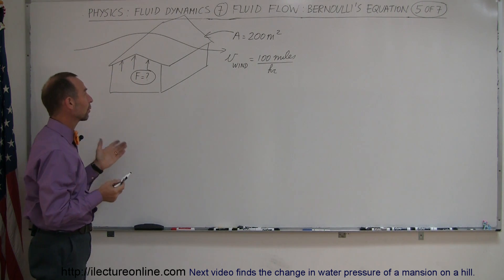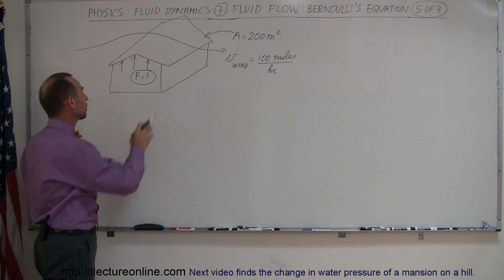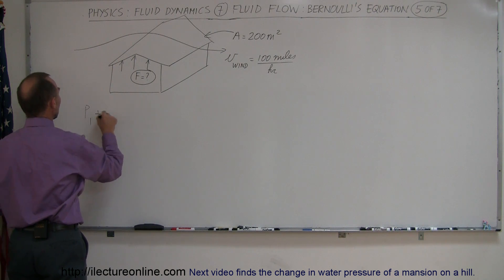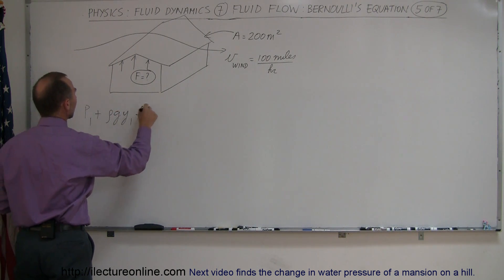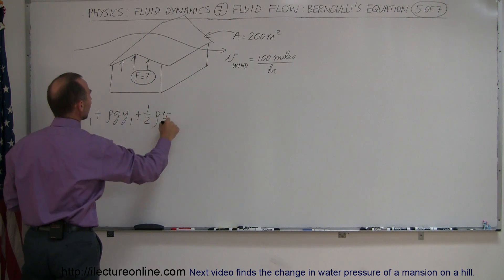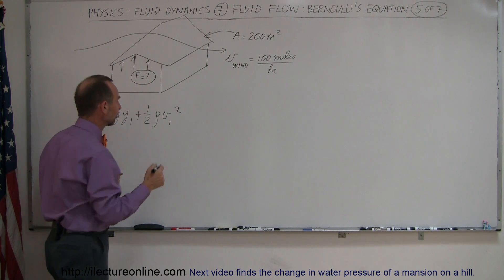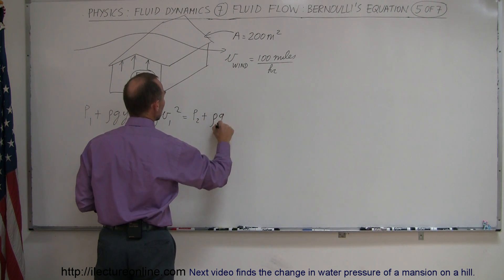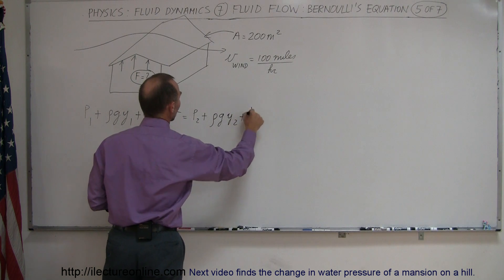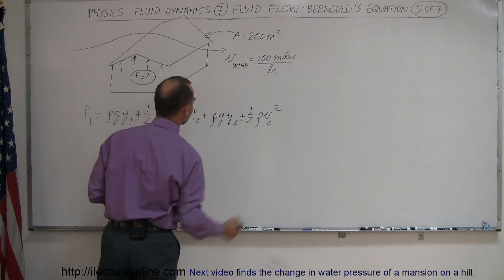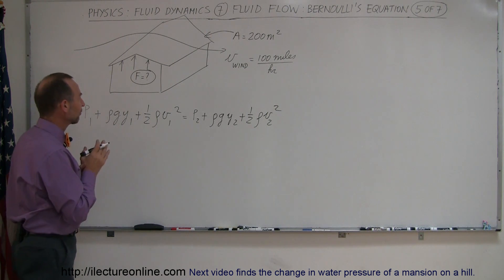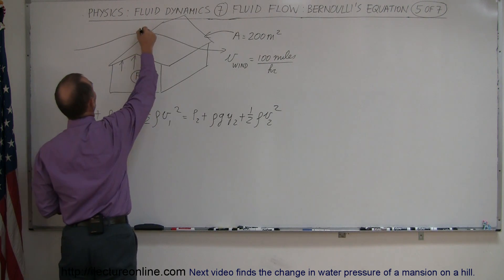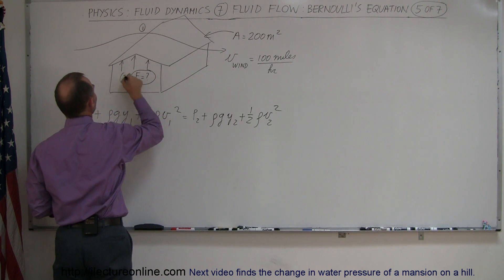First, we're going to find the pressure difference between the outside and the inside. For that we need Bernoulli's equation: P1 plus rho·g·Y1 plus ½·rho·V1² equals P2 plus rho·g·Y2 plus ½·rho·V2², where I used the letter Y for height. Let's call point 1 outside and point 2 inside the house.